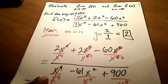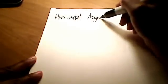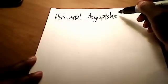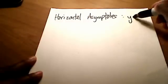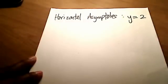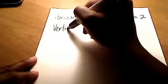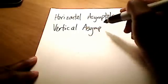Now we have the horizontal asymptotes. In this case, there's really only one: y equals 2. Now let's find the vertical asymptotes for this same problem.